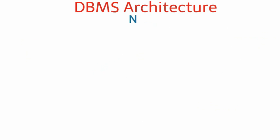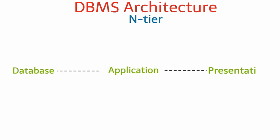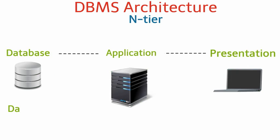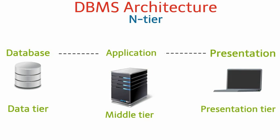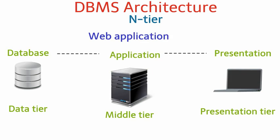Another type of architecture is n-tier. In the case of n-tier or multi-tier architecture, the database, application, and presentation layers are stored on three or more different tiers. It typically contains three tiers: data tier, middle tier, and presentation tier. This kind of architecture is mostly used in web applications like e-commerce.